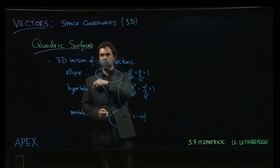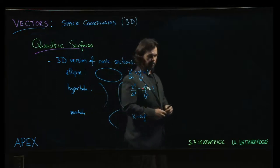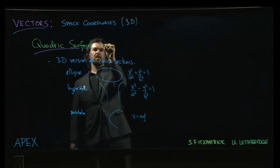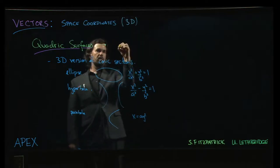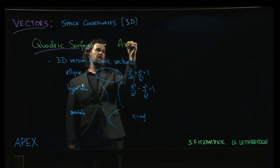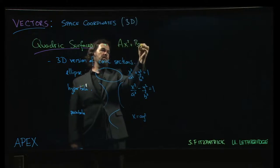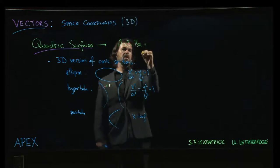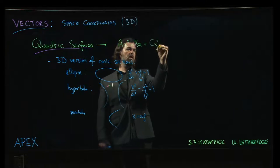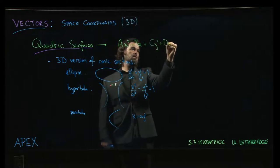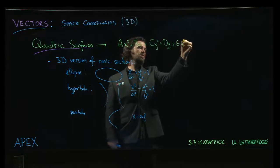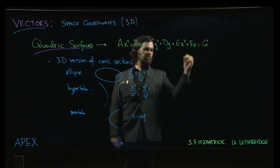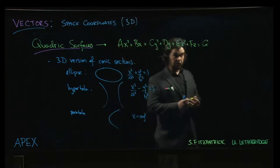So an ellipse has something like this standard form. Your hyperbola might look like this. And then the parabola - let's say x equals some a times y squared, something like that. Now a quadric surface equation is going to look like ax squared plus maybe a linear term in x, like we see in a parabola, but then we might also have y terms, z terms, and there might be a constant on the other side, like we see in an ellipse or hyperbola.